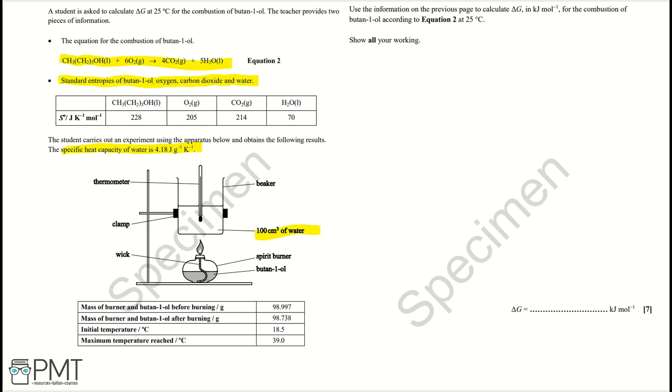Then the experimental data, specifically the initial and the maximum temperature, are going to be really important in our first step. And then the masses of the burner before burning and after burning are going to be useful in our second step. And then we need to note that we're working out delta G in kilojoules per mole.